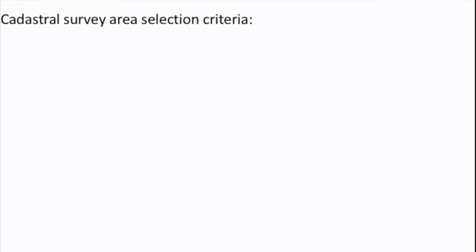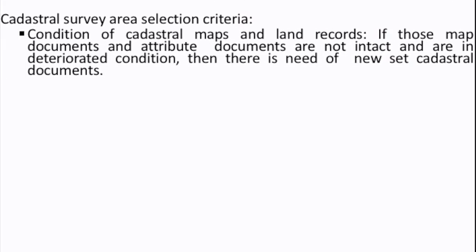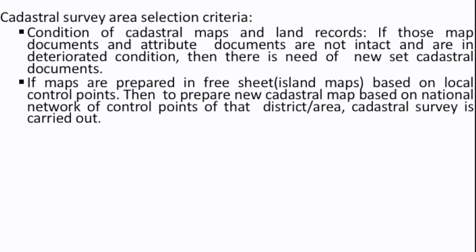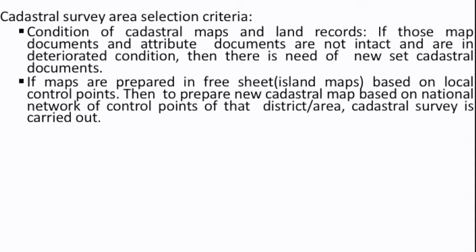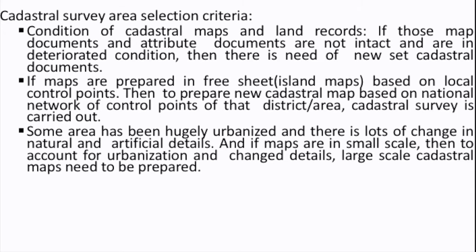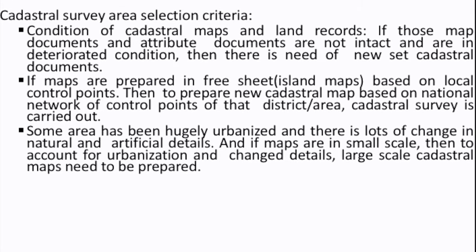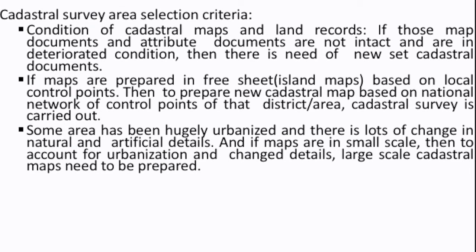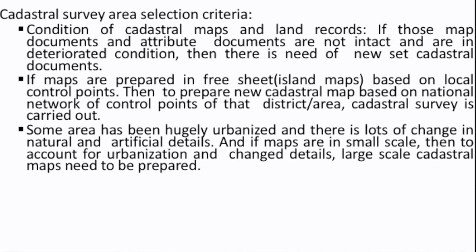For area selection in cadastral survey, it will be determined under the condition of cadastral map and land records. If those map documents and attribute documents are not intact, are in a deteriorated or damaged condition, then there is a need for new cadastral documents. If maps are prepared on a free sheet or island map based on a local control point, they need to be prepared on a national grid network control point of the district area. Some areas have been hugely urbanized with lots of change in natural and artificial features. If maps are in a small scale, then to account for organizational change, a detailed large-scale cadastral map needs to be prepared.